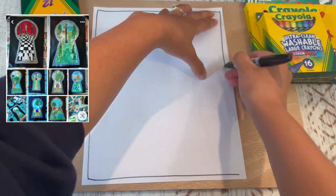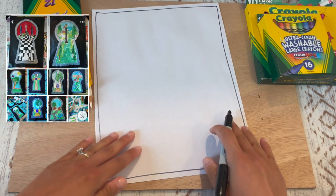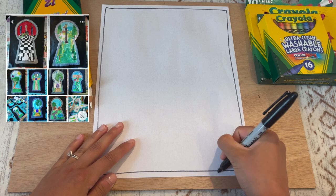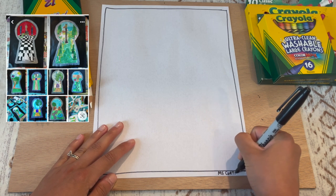So I'm just pulling my marker. All right, and I'm going to write my first and last name at the bottom right, and you can even add your homeroom number.